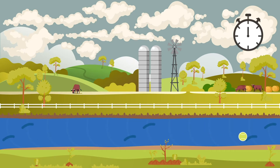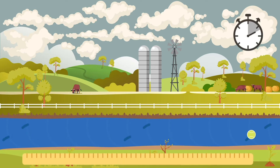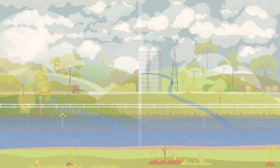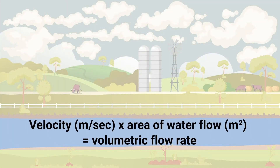Divide the distance by time to find the velocity in metres per second. If it is not possible to measure the flow rate, a good rule of thumb is one to three metres per second, depending on the steepness of the gully floor and roughness or vegetation. To estimate the volume of water flowing in your gully, multiply the flow rate by the cross-section area. Once you have an estimate of water flow, you can start to imagine what solution might be required to slow and spread the water.